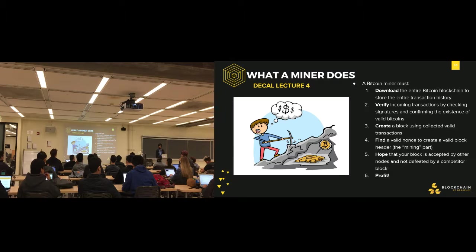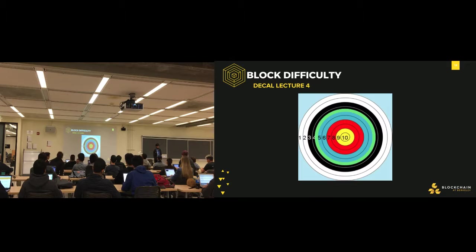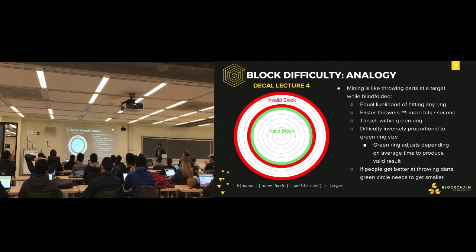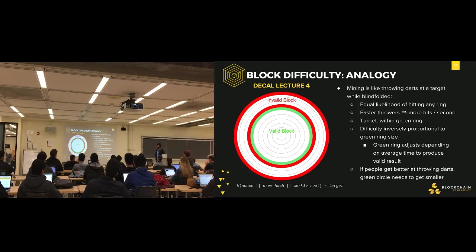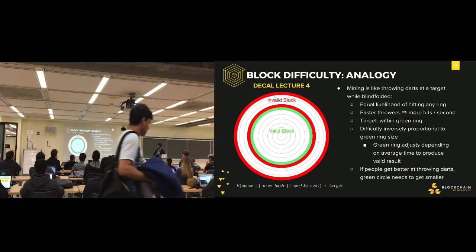The block difficulty can be related to a target. Imagine throwing darts while blindfolded — you have no idea where the darts are going, you just want to get a dart inside a little circle. The block difficulty is essentially a little target inside a target. The faster you throw darts, the more likely you are to hit that center circle. We can't choose nonces that will produce a certain hash, so all we can do is produce more hashes per second — throw more darts per second. As everyone gets better at mining and develops better hardware, that green circle gets smaller so the puzzle isn't too easy.